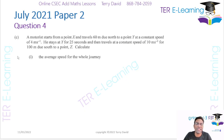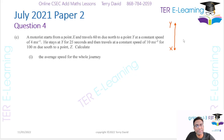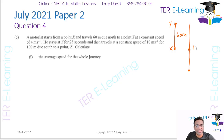So a motorist starts from a point x and travels 60 meters due north to a point y at a constant speed of 4 meters per second. He stays at y for 25 seconds and then travels at a constant speed of 10 meters per second for 100 meters due south to the point z. So let's draw a little diagram to show what's happening. So we're starting at the point x. He travels 60 meters due north, up to a point y, traveling a distance of 60 meters. Then he stays there for 25 seconds, and then he travels 100 meters due south to the point z.